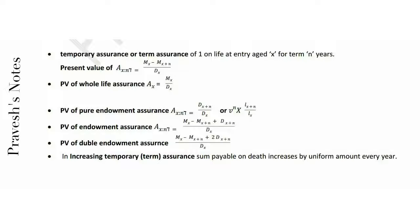PV of endowment assurance: A[x:n] equals Mx minus M(x+n) plus D(x+n), divided by dx. PV of doubly endowment assurance equals Mx minus M(x+n) plus 2 × D(x+n), divided by dx.